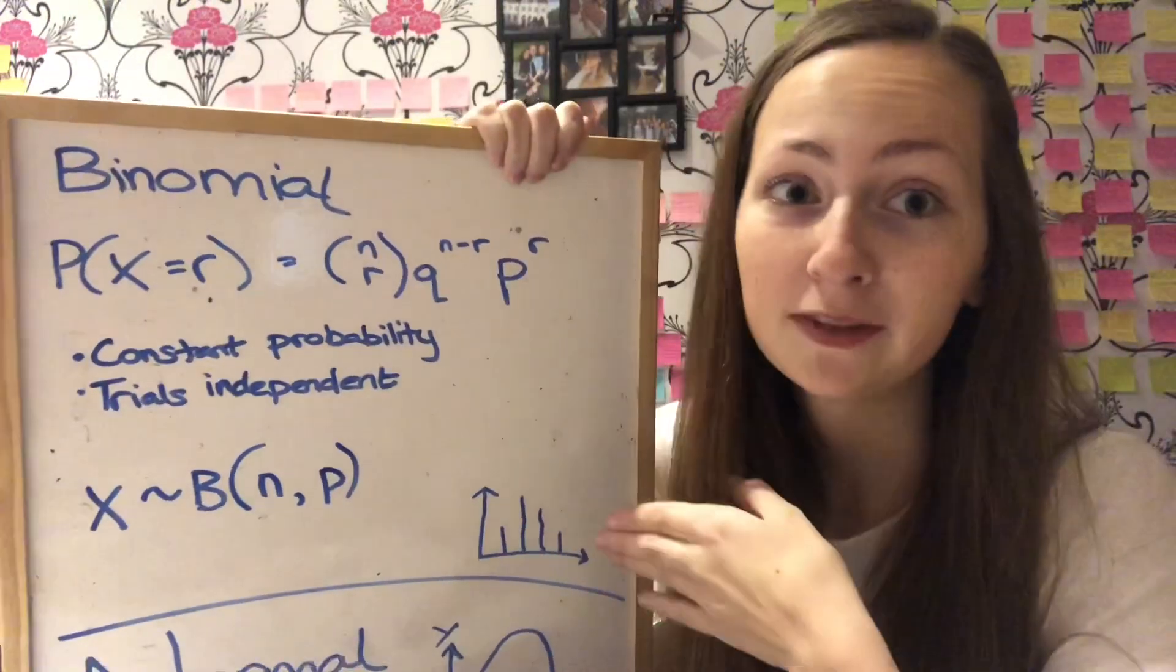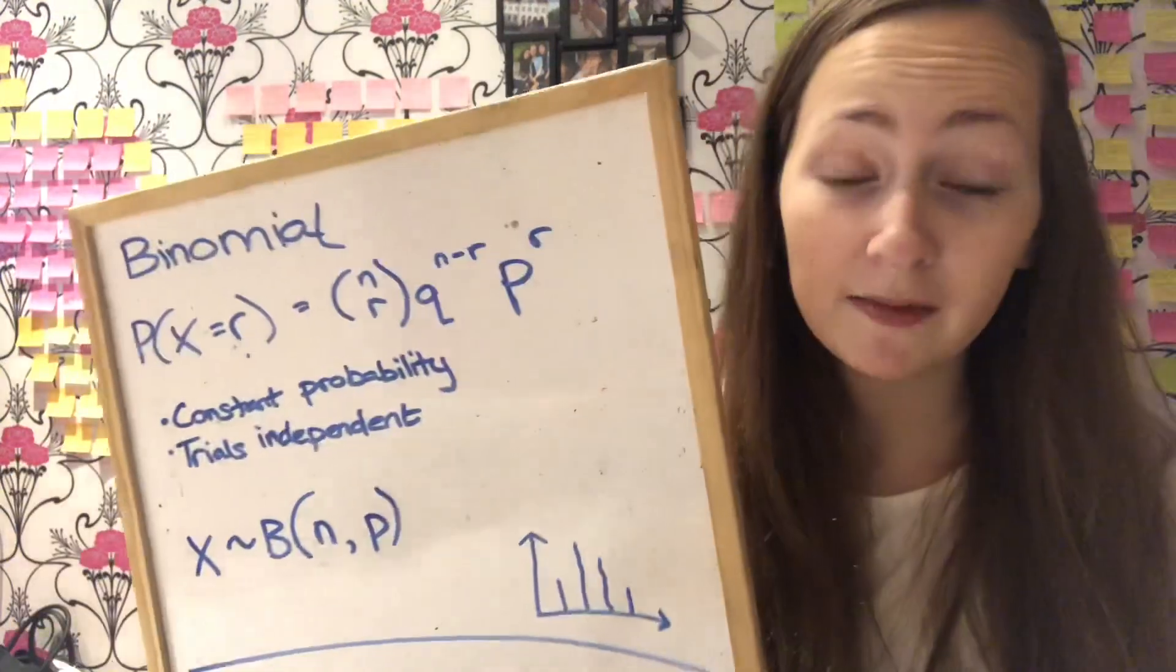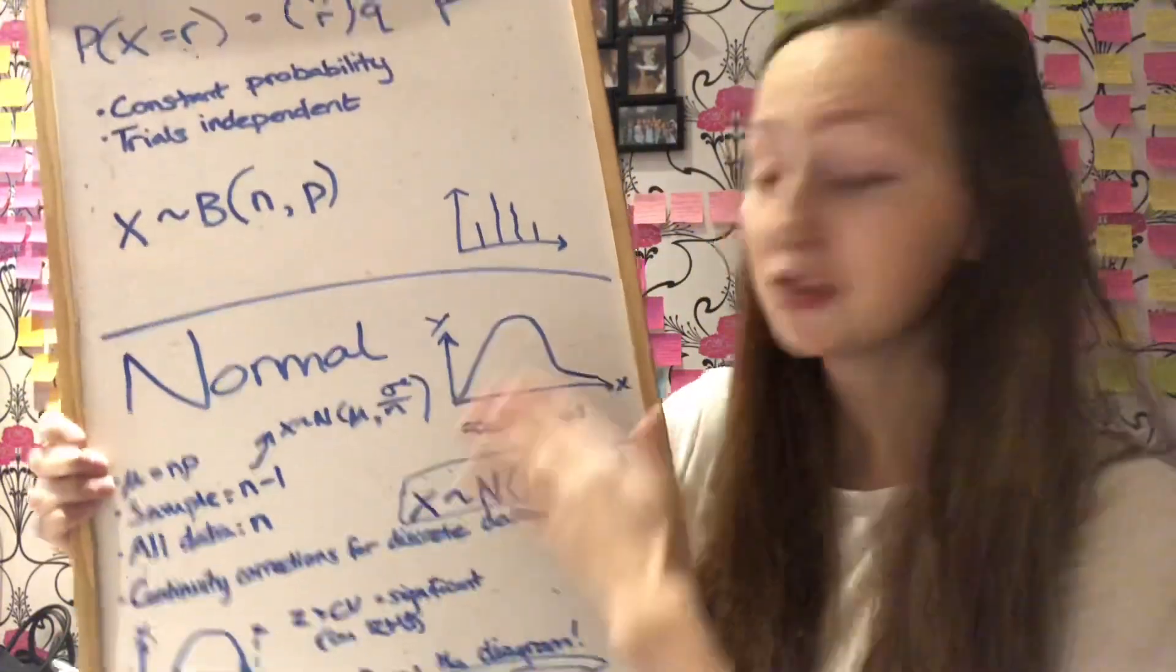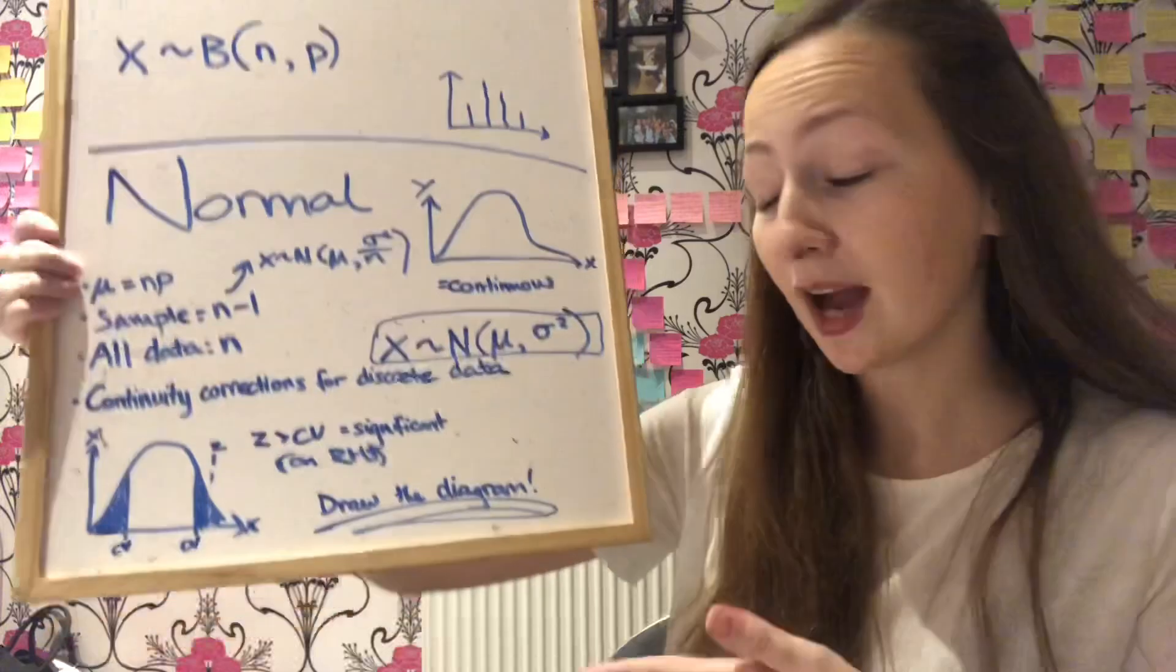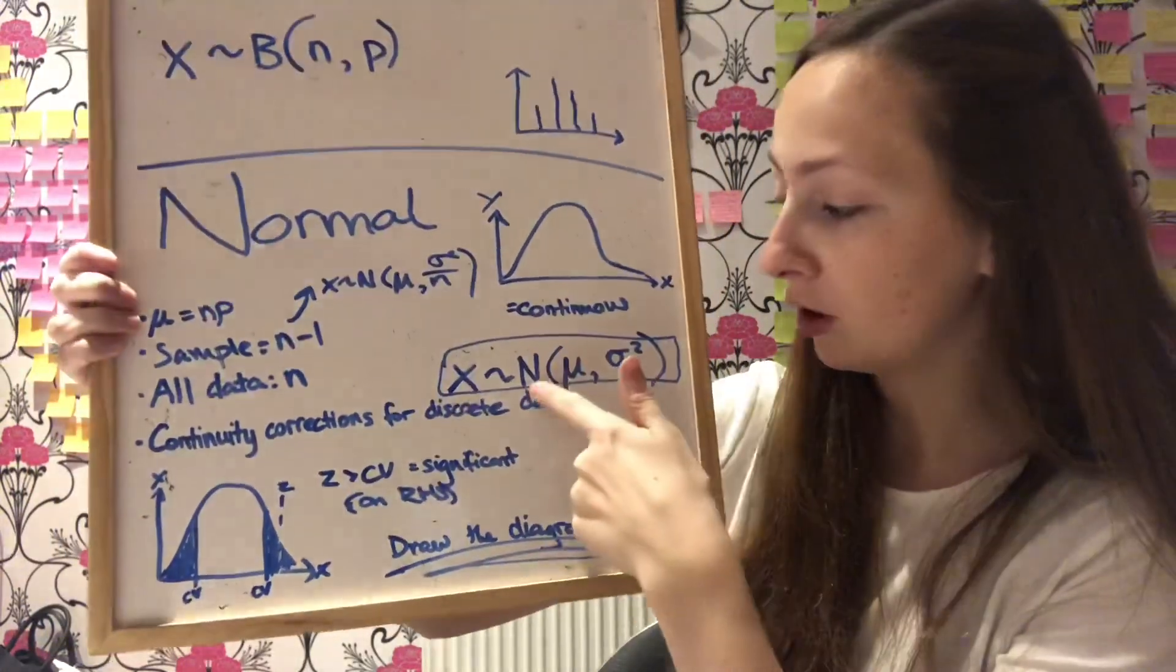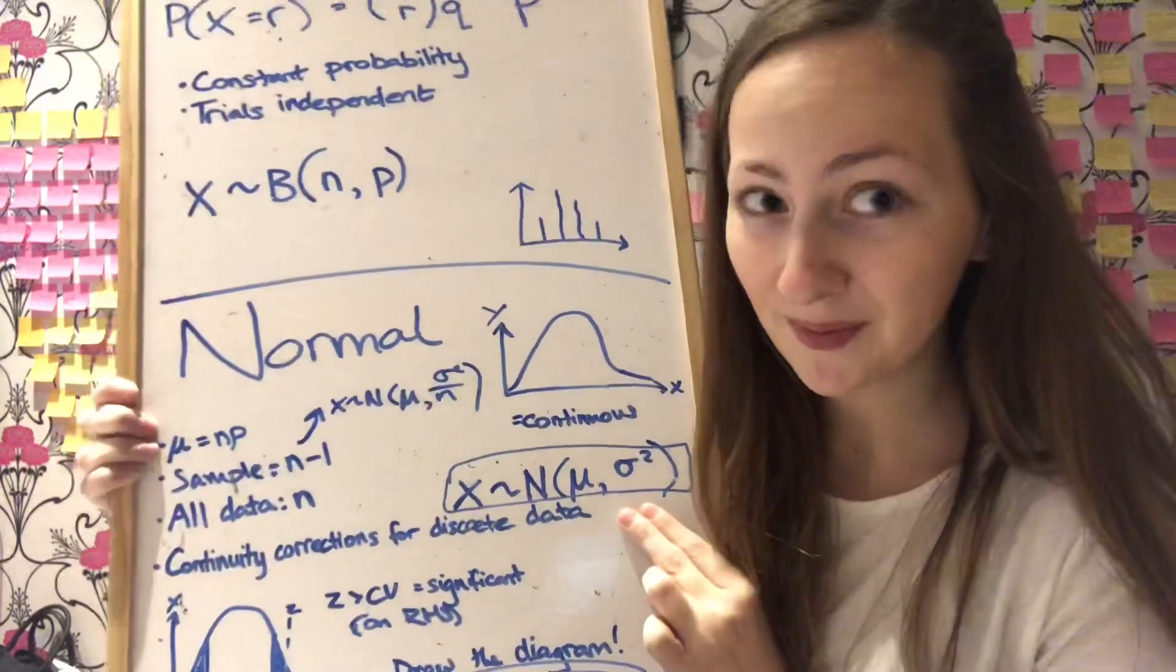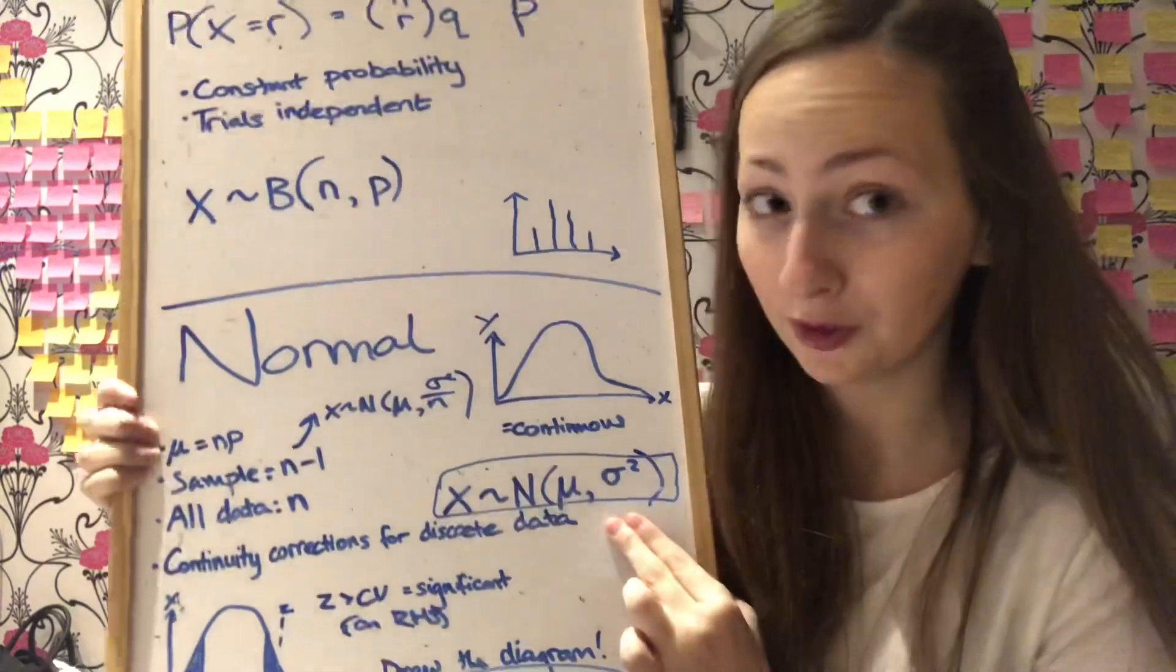So you really only use the binomial distribution for discrete data, things that are going to be exact. So discrete variables are always better represented on a vertical line graph like this, whereas normal distributions concerned with ranges therefore have a normal distribution like that. So the normal distribution can be described using this. It's X has the distribution of the normal with the mean and then the squared standard deviation.